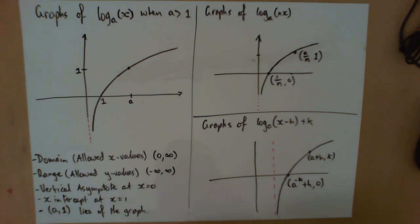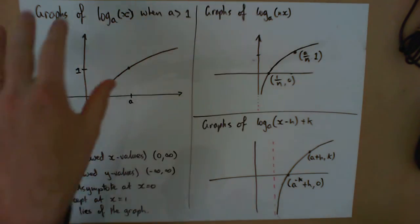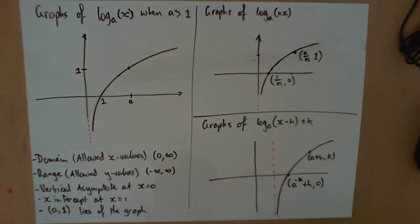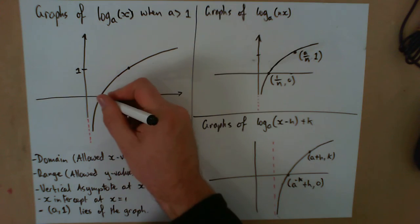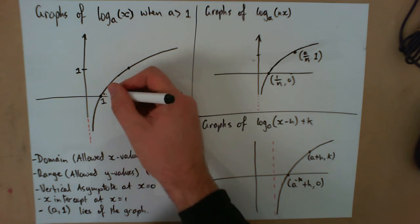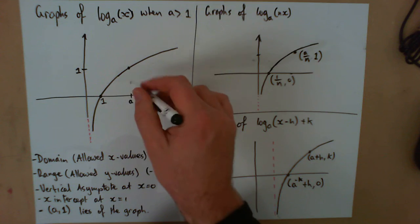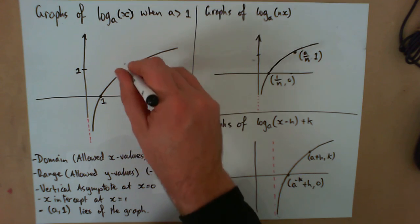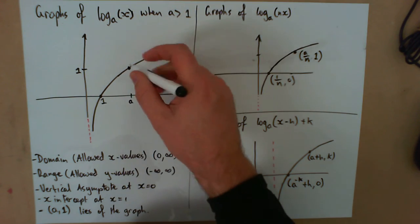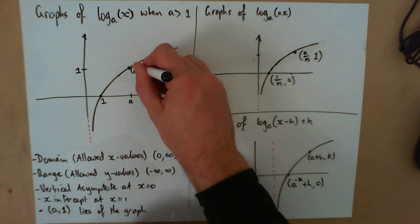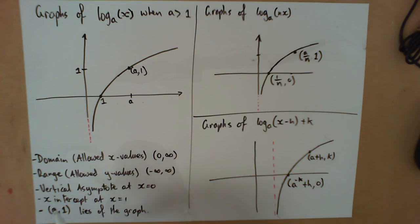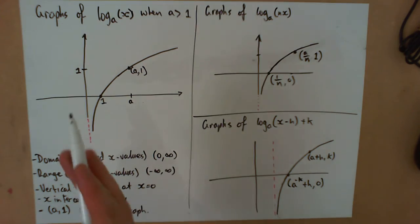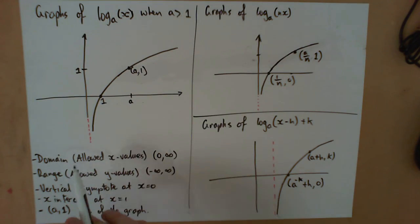Here are the properties of our log graphs. For our basic graph of log to the base a of x, where a is greater than one, we can see that we go through the x-intercept at one, and we also have another point on the graph at (a, 1), where a is our base.